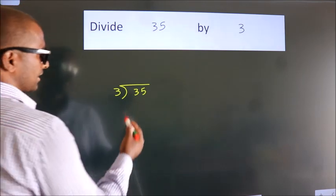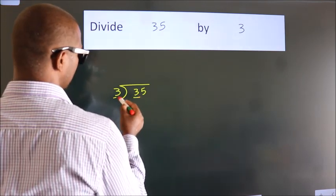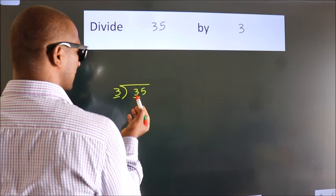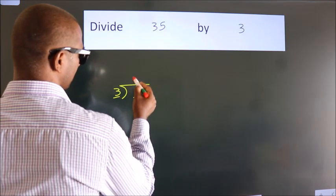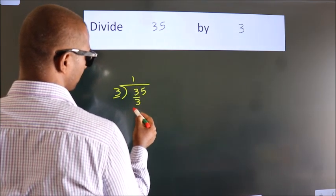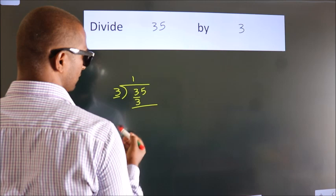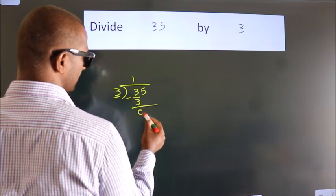Next, here we have 3. When do we get 3? In the 3 times table: 3 times 1 is 3. Now we subtract and get 0.